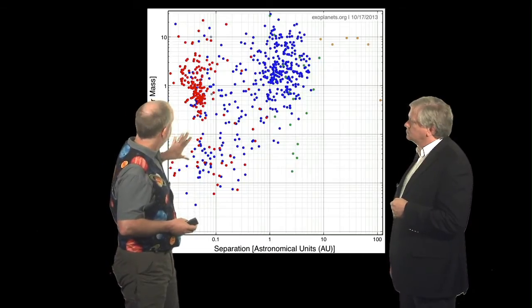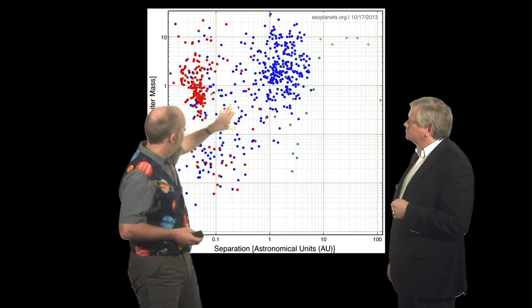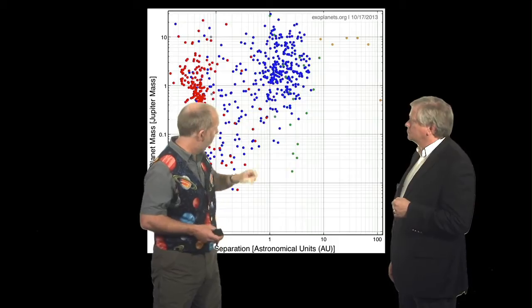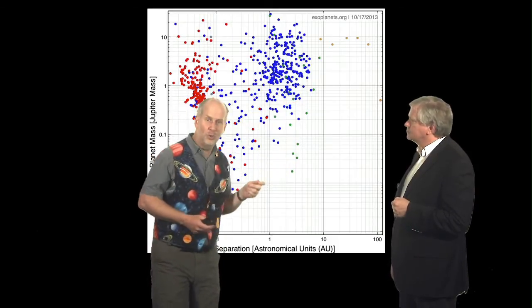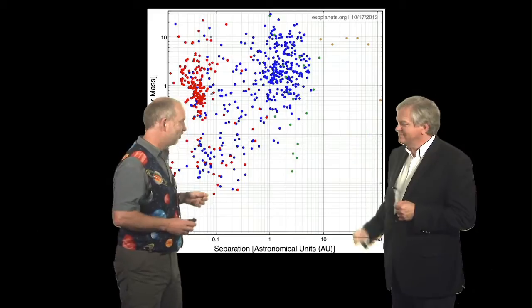And we've seen the radial velocity which finds some of these hot Jupiters but is finding more and more of these eccentric giants up here. And the green dots over here, I hope you don't have red-green colour blindness like Brian does and can discriminate them.